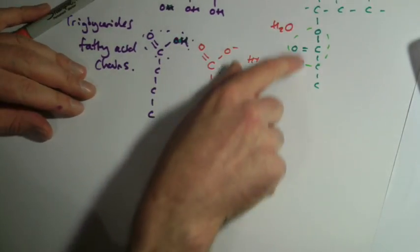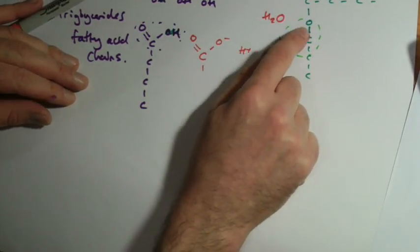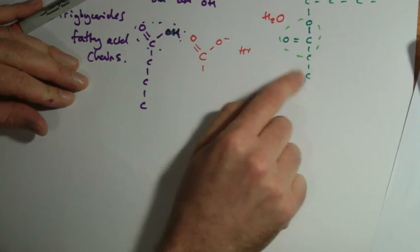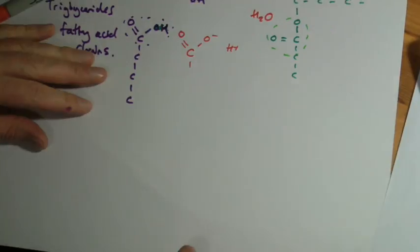Again, worth noting, this is a nice, simple, straightforward way to draw it. Chemically, it doesn't work like this. These things are on kind of zigzagging. They're on angles because of the way that carbon atoms bond together.